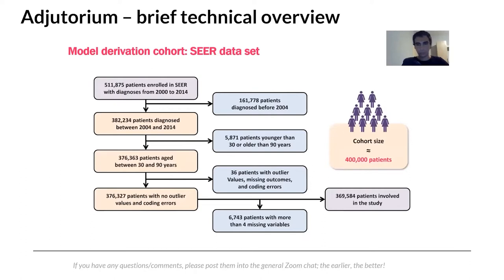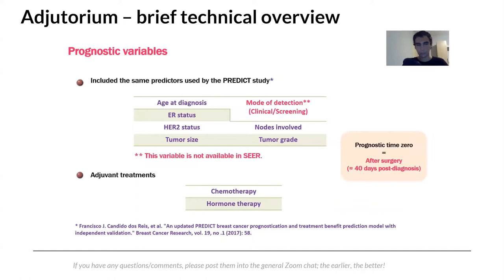Both cohorts are roughly half a million patients. The UK data was used for model derivation and internal validation; the SEER data was used for external validation. Prognostic variables were selected based on existing literature: age at diagnosis, mode of detection, estrogen receptor status, HER2 status, tumor size, number of lymph nodes involved, and tumor grade. Treatment options considered were chemotherapy and hormone therapy, applied approximately one month post-surgery.